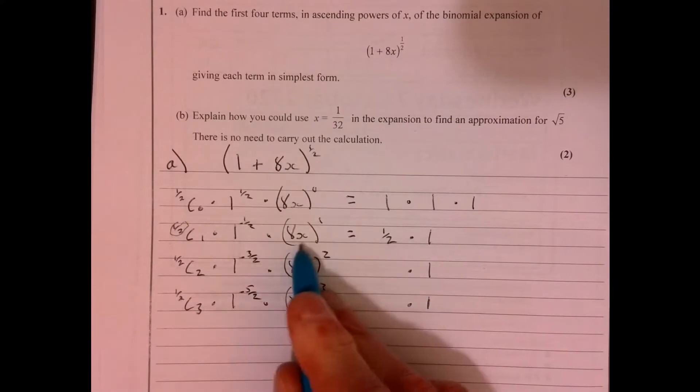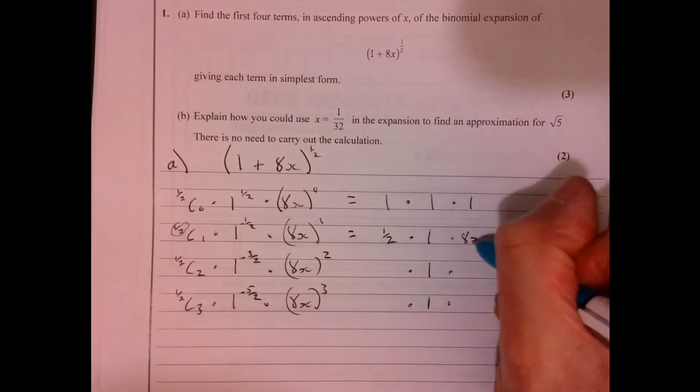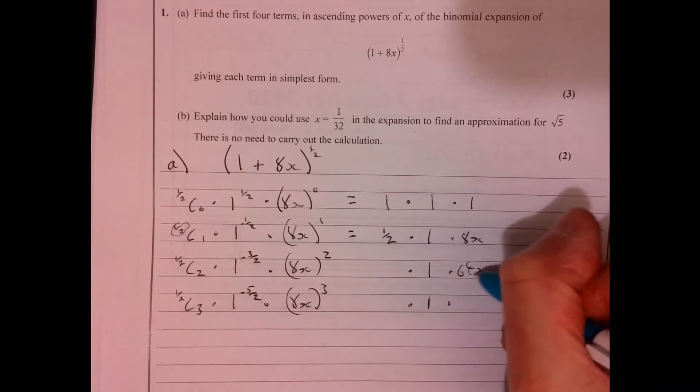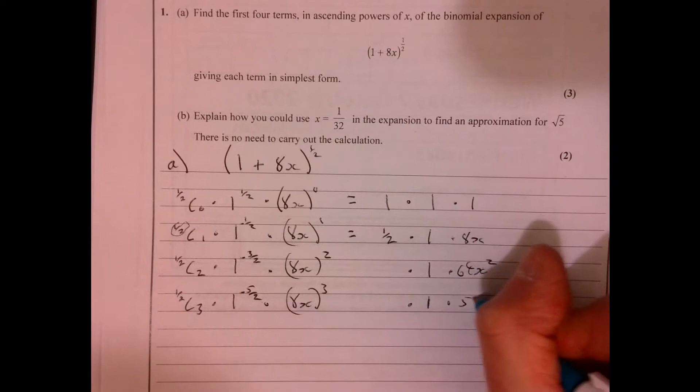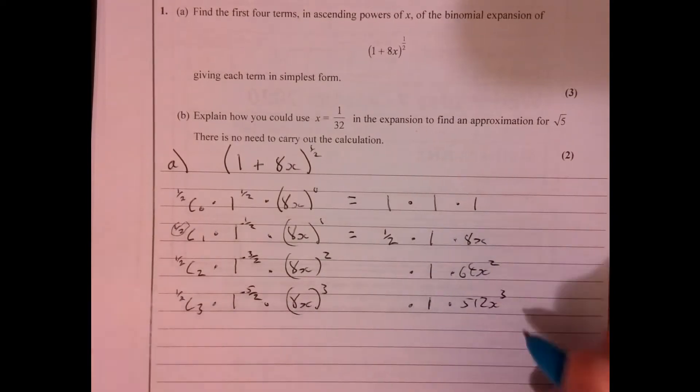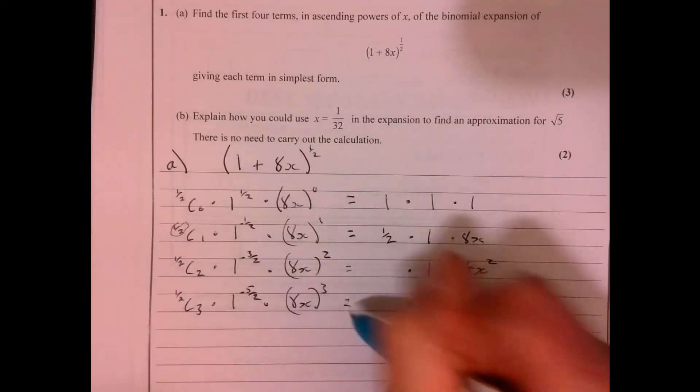These ones are quite easy to fill in. 8x to the 1, so that's just 8x, 64x squared, and then 8 cubed is 512x cubed. So just do all the stuff that we can do. We haven't really got to think too much.